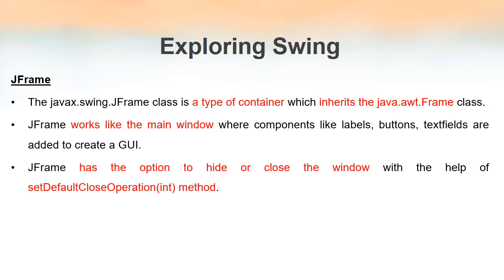JFrame has a method named setDefaultCloseOperation, which always accepts an integer value as its parameter. Using this method, we can decide whether to hide or close the window when the user clicks the close button of the frame.